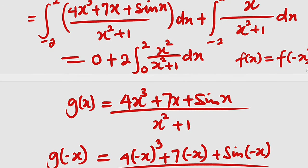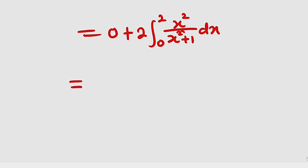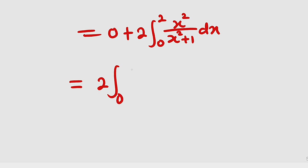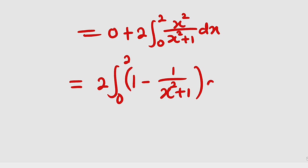So now let us continue. Since the first integral is 0 it is gone. For x²/(x²+1), if you subtract 1 from the denominator you get x², which matches the numerator. So we can rewrite x²/(x²+1) as 1 − 1/(x²+1). You can verify: (x²+1)·1 − 1 = x², giving x²/(x²+1), exactly as required. So the integral becomes 2 times the integral from 0 to 2 of [1 − 1/(x²+1)] dx.